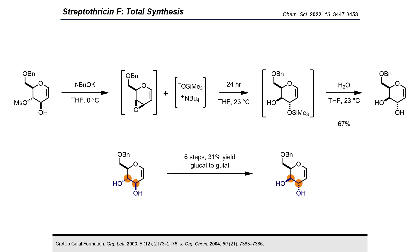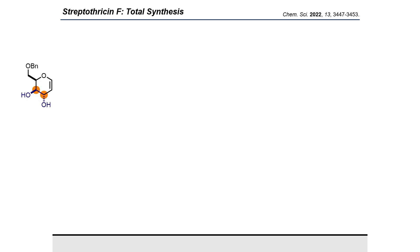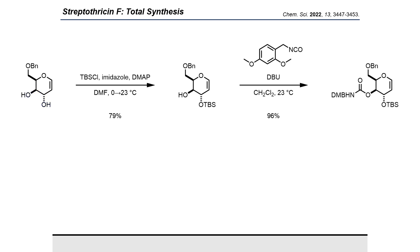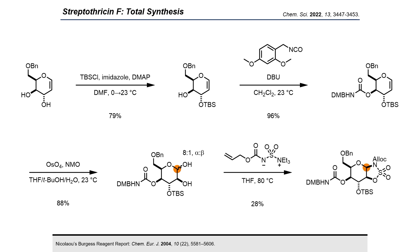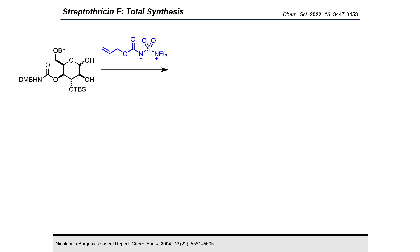With our gulal sugar in hand, TBS protection was performed with high regioselectivity, followed by installation of the DMB-protected carbamoyl group. Dihydroxylation through the Upjohn method then prepared us for installation of our key 1,2-diamino functionality. To do this we employed Burgess reagent chemistry pioneered by Nicolaou and co-workers. In this protocol, an alloc-modified version of the Burgess reagent is added to our dihydroxylated sugar to produce a beta-sulfamidate. Mechanistically, this proceeds stepwise, beginning with the addition of two equivalents of the Burgess reagent.